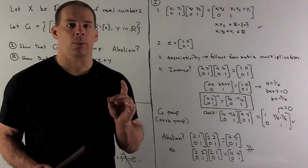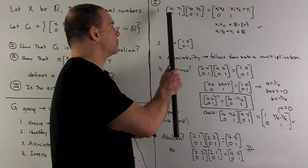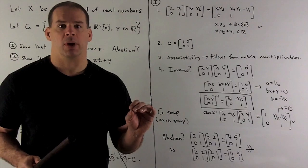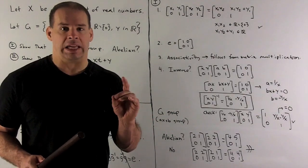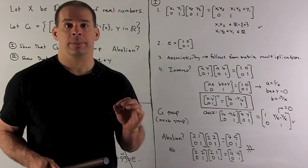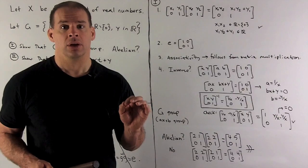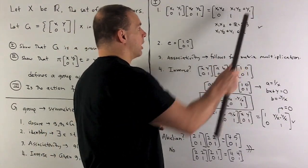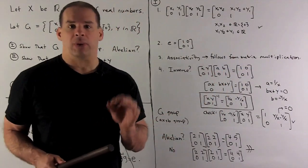For closure, we pick any two matrices in our set: X1, Y1, zero, one and X2, Y2, zero, one. We multiply them using matrix multiplication. What do I need to check to make sure that I'm still in G? Whatever's in the upper left-hand corner must be a non-zero real number. Since X1 and X2 are not zero, their product can't be zero. In the upper right-hand corner, we can put any real number, so it doesn't matter what comes out there. Then I need the zero and the one. So we have closure.